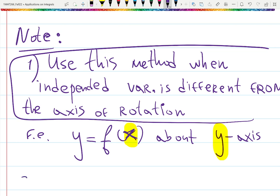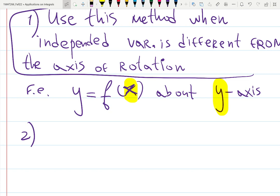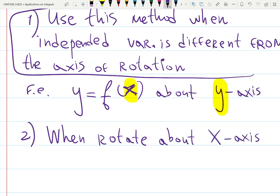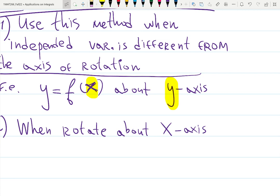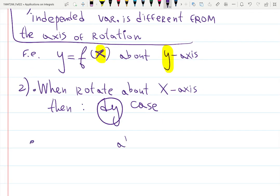Note two. Unlike in the previous case, when you rotate about x axis, we're going to use dy case. When rotate about x axis or parallel to x axis, x axis or anything looks like x axis. Then, this is case two, dy case. So, it completely flips the order. And when rotate about y axis. Then, this is case one, dx case. Like so. Note number two.